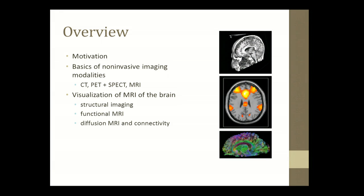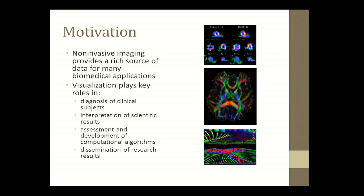I'll review some of the concepts behind visualizing structural images of anatomy, briefly touch on functional MRI, and then describe some of the methods that we use for examining connectivity in the brain using diffusion imaging. The motivation for visualization is fairly straightforward, especially to the members of the VisBee community. We have a very rich source of data that has many biomedical applications, and visualization allows us to do a variety of things, such as diagnosing clinical patients, performing surgical planning, interpreting and disseminating scientific research results, as well as to assess and develop computational and mathematical approaches for image analysis.